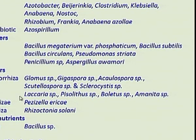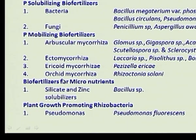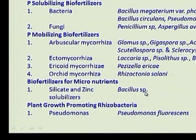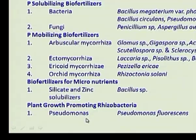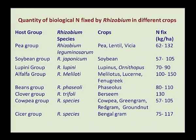Ectomycorrhizal fungi like Laccaria, Cenococcum, and Boletus amanita species are important. In ericoid mycorrhizae, Pezizella, Erica, and orchid mycorrhizae, Rhizoctonia and Scleroderma are important mobilizing bio-fertilizers. Bio-fertilizers for micronutrients include Bacillus, mainly for silicate and zinc solubilizing, and plant growth promoting rhizobacteria like Pseudomonas are also important bio-fertilizers.